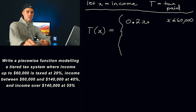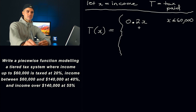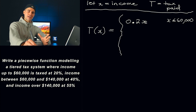For example, if your income was $50,000, then 0.2 times $50,000 would give us $10,000 — so you'd be paying $10,000 in taxes. So the first piece of this piecewise function is 0.2x: take your income x, multiply it by 0.2, if that income is less than or equal to $60,000.